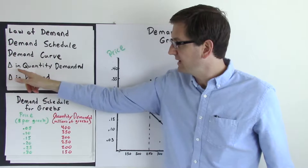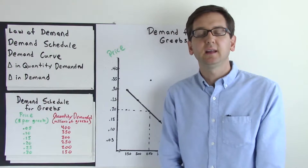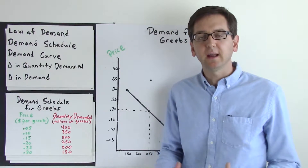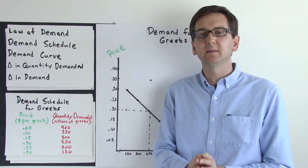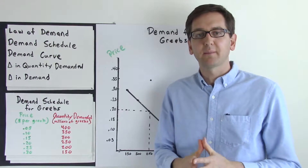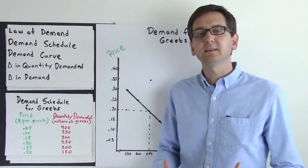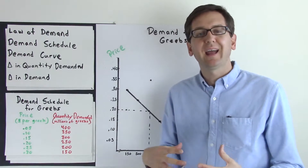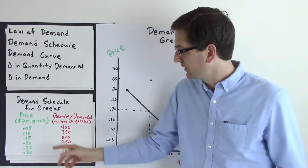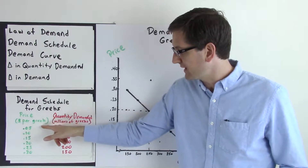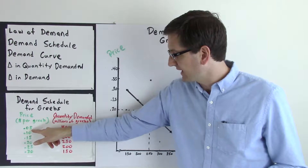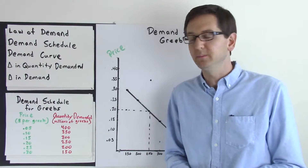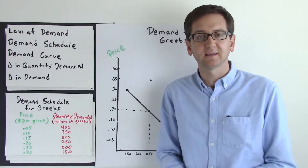We're going to look at the difference between a change in quantity demanded and a change in demand, using the delta symbol to illustrate change. Let's look at a demand schedule first. I've created a demand schedule for a fictional product called Grebes. A demand schedule is simply a list of prices and the corresponding quantities demanded at each one of those prices. For example, if the price per Grebe is 5 cents, the quantity demanded will be 400 million.